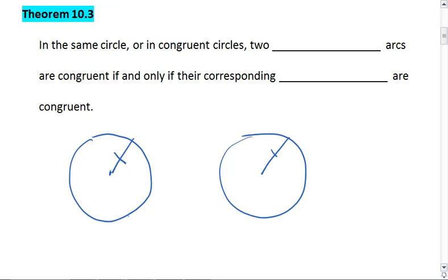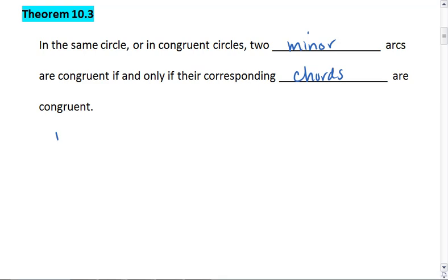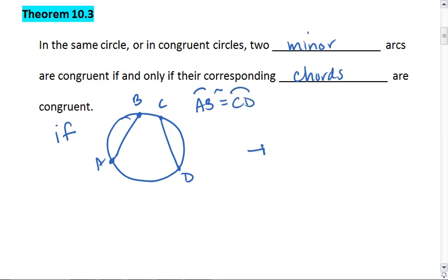Two minor arcs are congruent if and only if their corresponding chords are congruent. So if we see that arc AB is congruent to arc CD, then we know that chord AB and chord CD are congruent. If their arcs are congruent, then their chords are congruent.